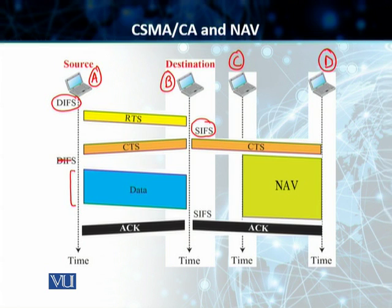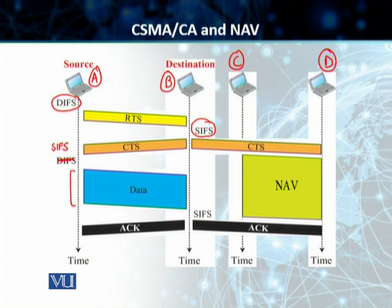After receiving the RTS and waiting for a period called SIFS — the Short Interframe Space — the receiver sends a Clear to Send back to the source. This is another control frame indicating that the destination is ready to receive data. The source station then waits for SIFS and begins sending the data. After the data is transmitted, the destination station again waits for SIFS and then sends an acknowledgement back to the source.